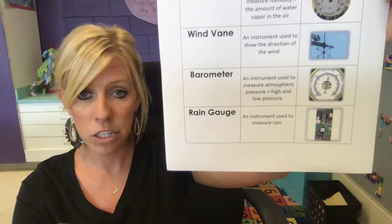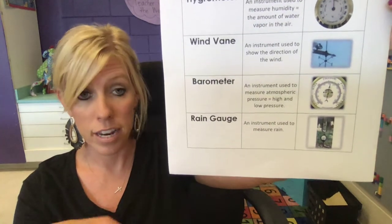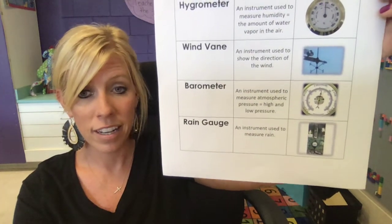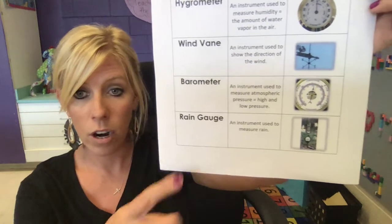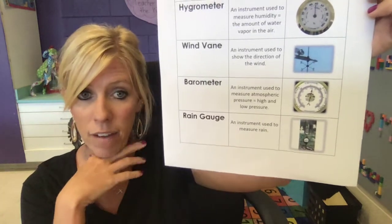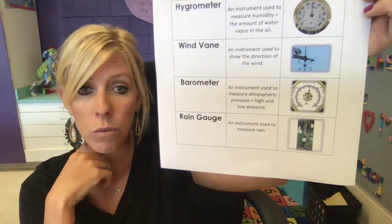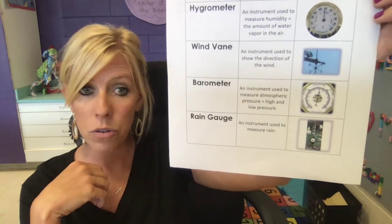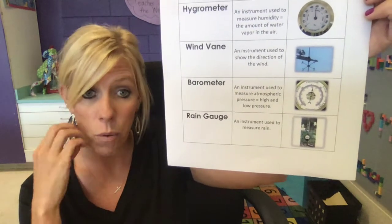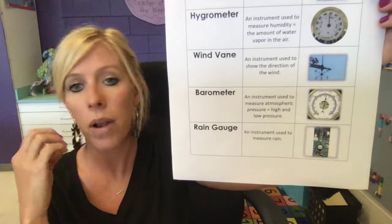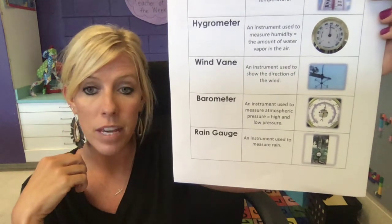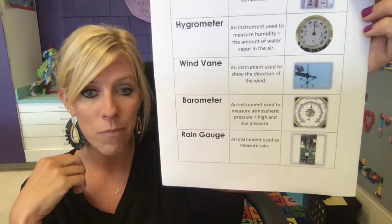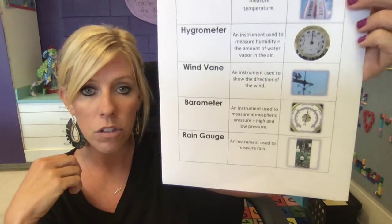And then last, a rain gauge — an instrument used to measure rain. There are lots of varieties of this. We have some here at school. You may have one at home. We're going to make one, or I'm going to give you the directions on how to make one, and hopefully we can measure some rain while we're at home. So those are some basic instruments that we use to measure weather.